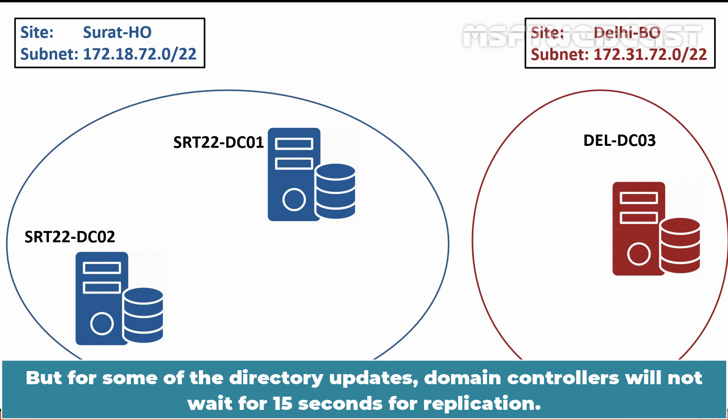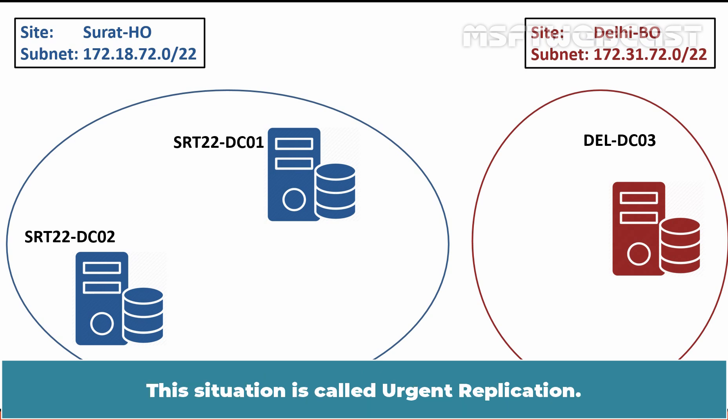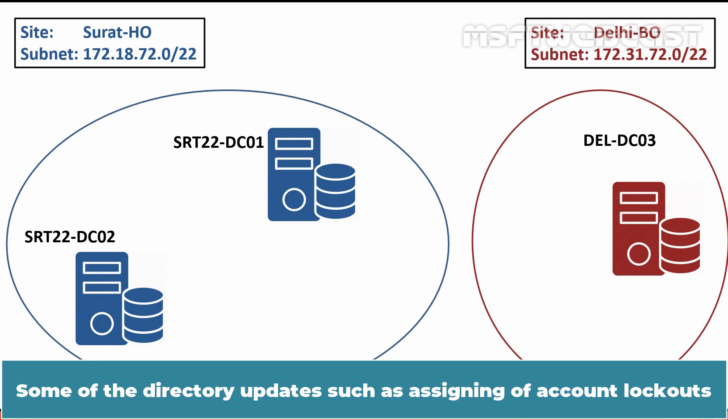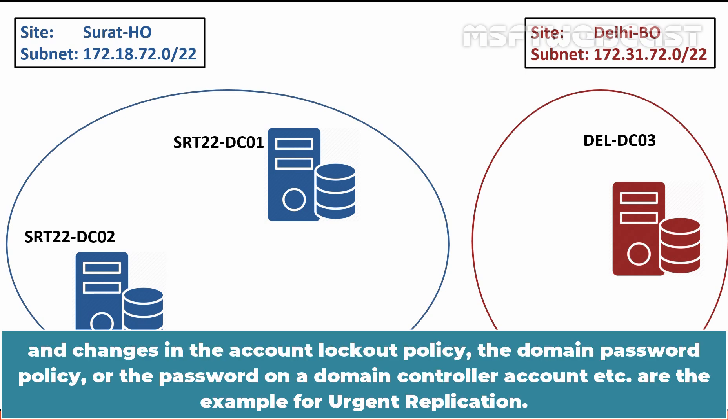For some directory updates, domain controllers will not wait 15 seconds for replication. This situation is called urgent replication. Examples include account lockouts, changes in the account lockout policy, the domain password policy, or the password on a domain controller account.